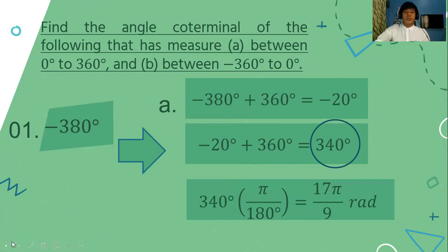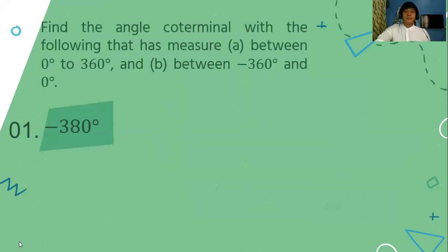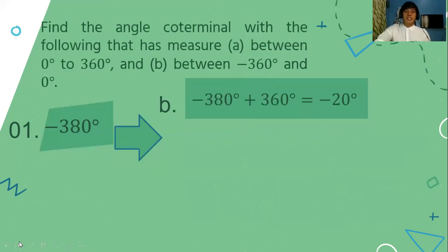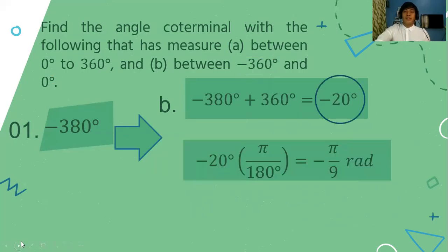We also convert it into radian measure since the modified assessment requires that as well. Simply multiply by pi over 180. For letter B, the negative coterminal angle, add 360 degrees to negative 380 to get negative 20 degrees, which is between negative 360 and 0 degrees. Converting negative 20 degrees times pi over 180 gives the simplified form of negative pi over 9 radians.